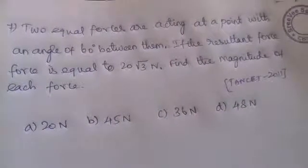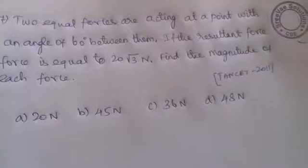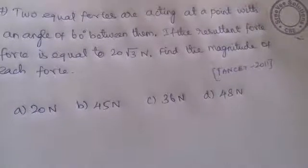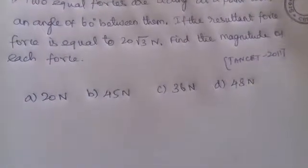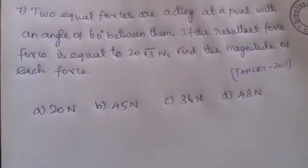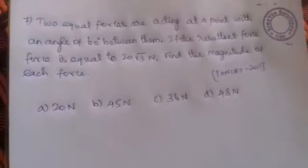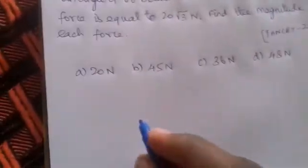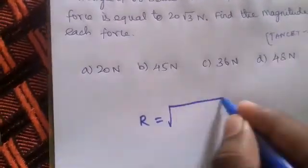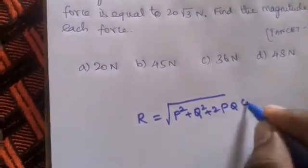Two equal forces are acting at a point with an angle of 60 degrees between them. If the resultant force is equal to 20√3 Newton, find the magnitude of each force. The equation for resultant force is: R = √(P² + Q² + 2PQ cosθ).